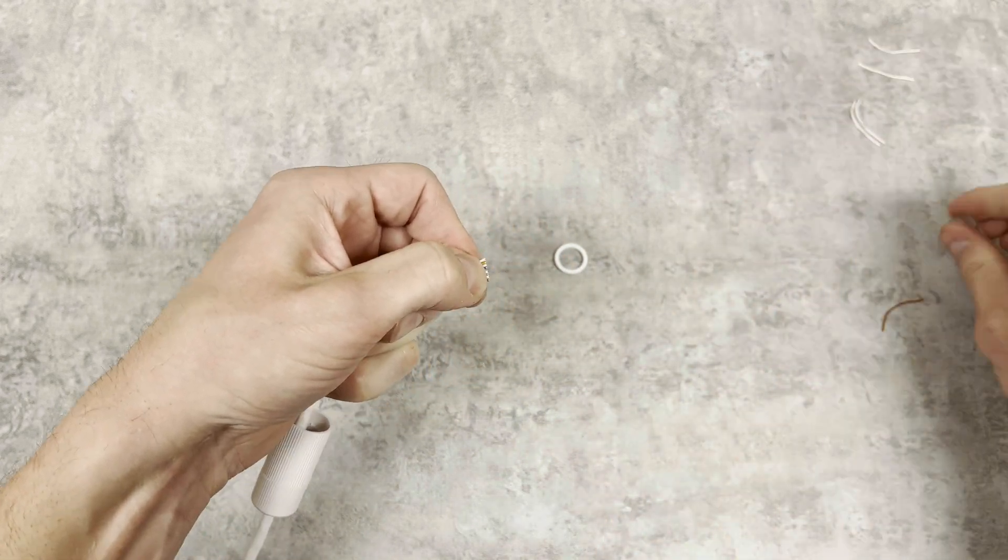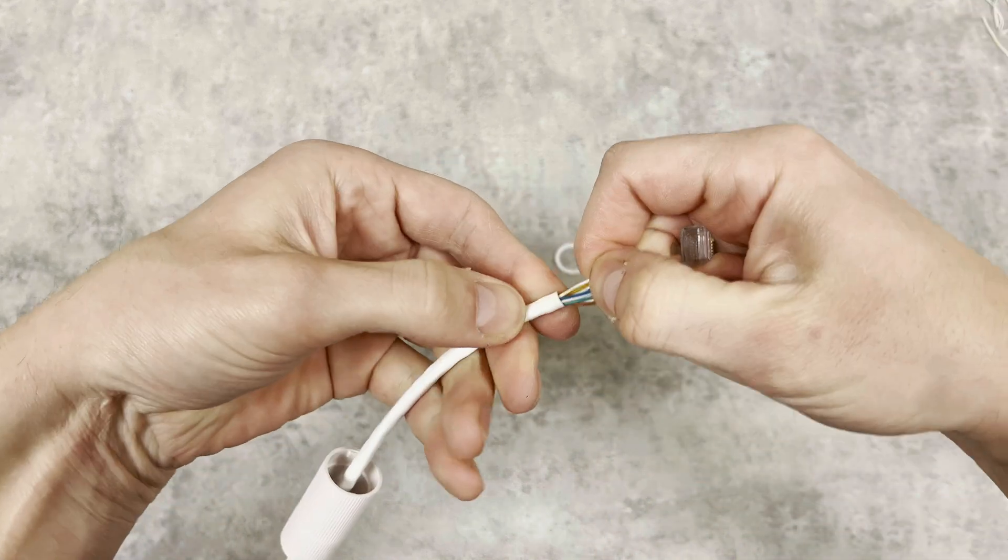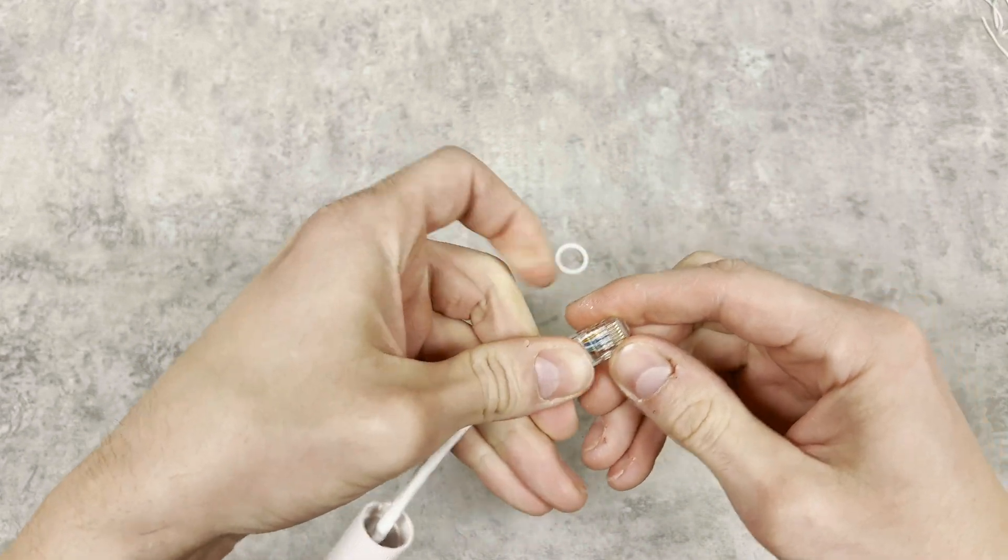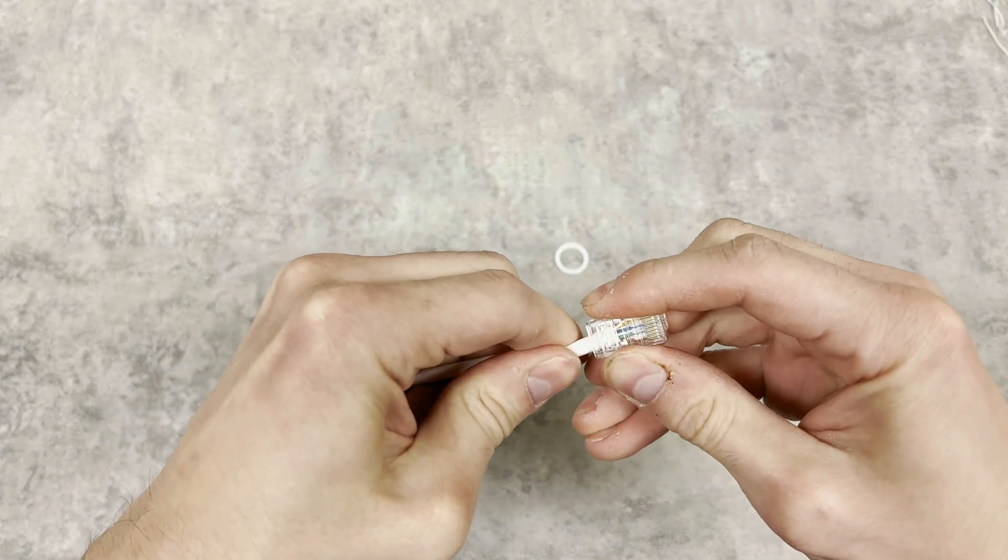Once the cables are seated inside of the end, we're looking for two things here: the ends of the cables are all seated where they belong, and that the RJ45 connector has some sheathing to grab onto when I crimp the connector.